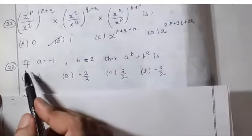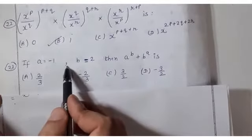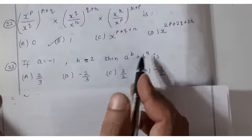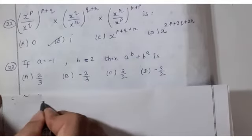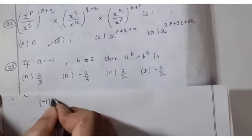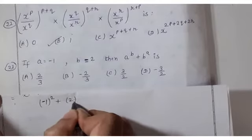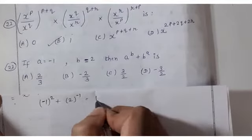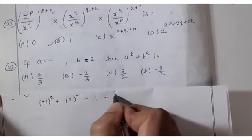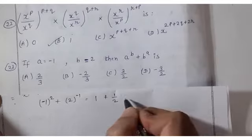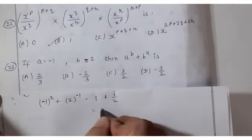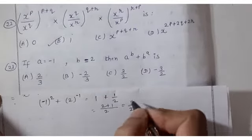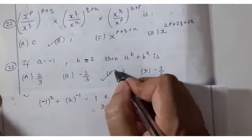Question 23: if a = −1 and b = 2, find a^b + b^a. So (−1)² + 2^(−1) = 1 + 1/2. Taking LCM: 2/2 + 1/2 = 3/2. Answer is 3/2.